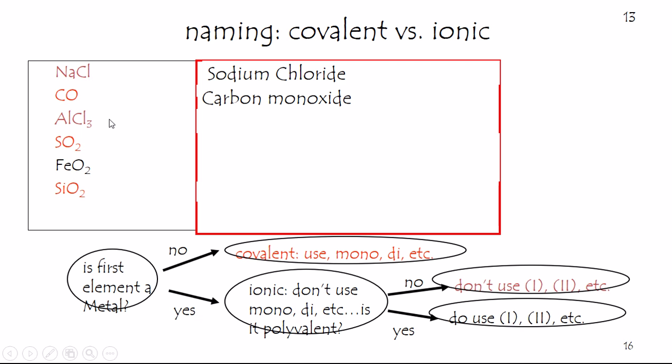Do not use prefixes. Do not say aluminum trichloride. But should we say aluminum three chloride? The only time we really don't use a number is when it's monovalent. It turns out aluminum really is monovalent — I don't know if your instructor would take off points if you put the three in there or not. After all, that is the charge on it, but generally they don't. Aluminum is only plus three, so: aluminum chloride.